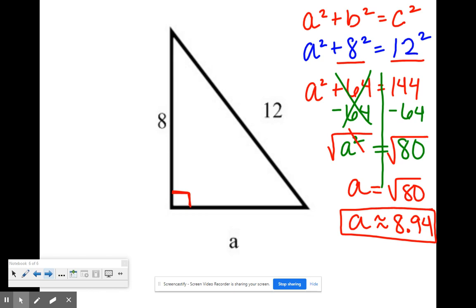One way to check your answer kind of quickly is to make sure that your leg is smaller than your hypotenuse. So since my hypotenuse was 12, remember I said at the beginning that the hypotenuse always has to be your biggest number. Well, since A is 8.94, I know that I did at least something right. So the only thing that we do different when we are solving for a leg is that we subtract instead of add the two parts together, just using algebra.